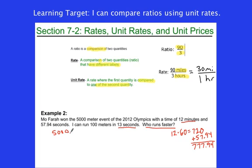So to do this, we're going to first start with just the rate because that's the information we have. The rate here is 5,000 meters to that time that I just came up with. That's for Mo Farah, the Olympic gold medalist. For me, I'm doing 100 meters in 13 seconds.